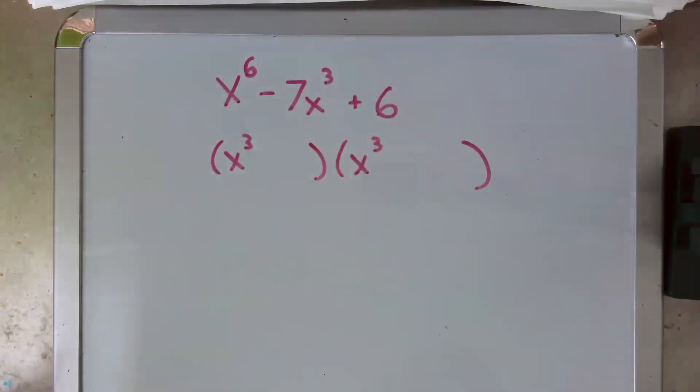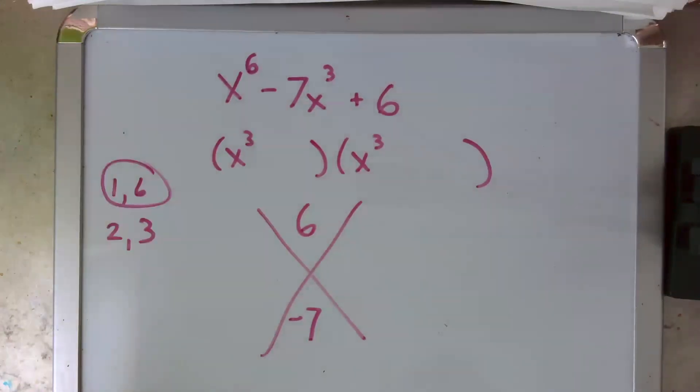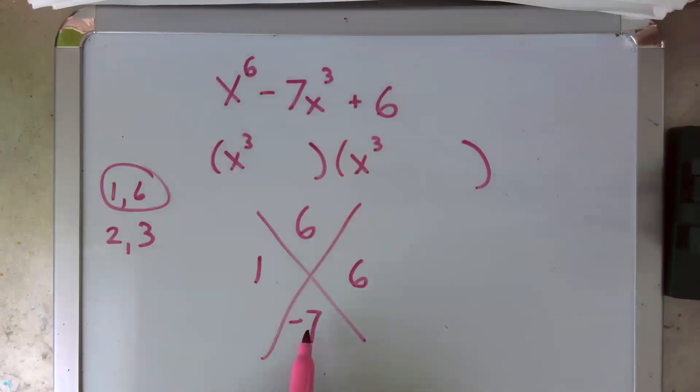Okay, but now we go ahead and use the x method still. So our ac goes up top, our b goes down here, we make a quick factor list. And we see that one and six will make our seven, we see that in order for this to be negative seven, these both have to be negative. But that's okay, because when we multiply them, we get our positive six, we pop those in here.